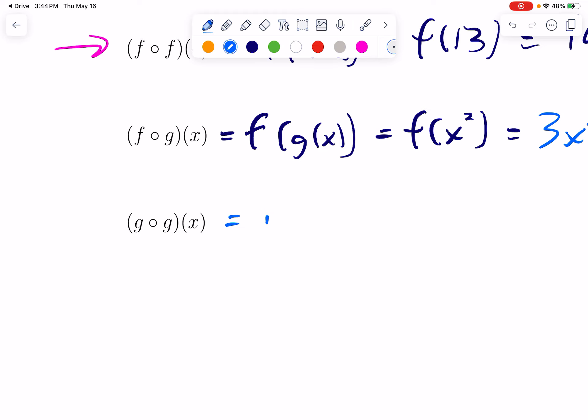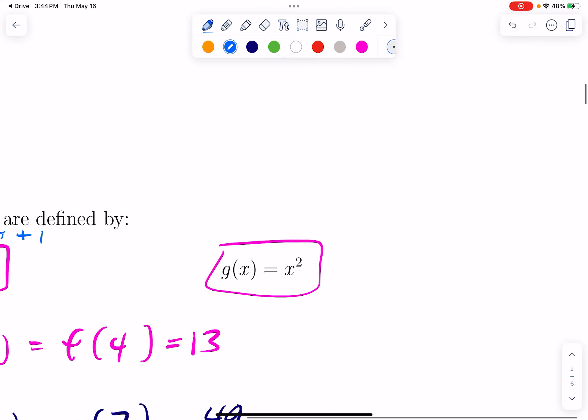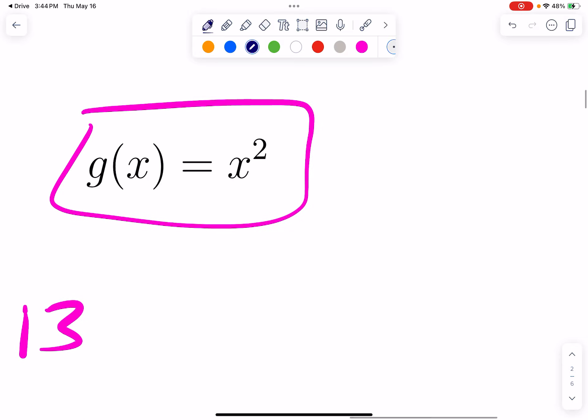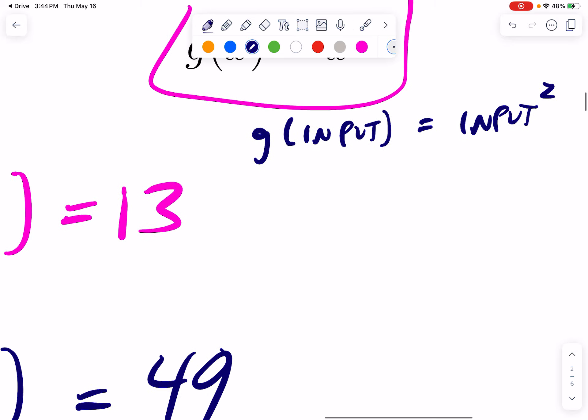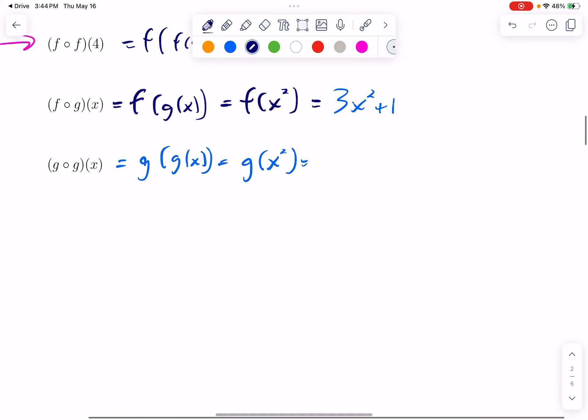Here we have G of G of X. G of X as before is X squared. Well, what is G? Here G of X is X squared, but that just means G of the input is the input squared. This is just a function that squares things. Whatever I'm giving it as my input, my output is just that thing squared. So this would be X squared squared, which is X to the fourth.